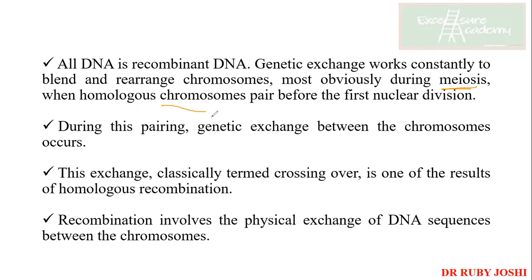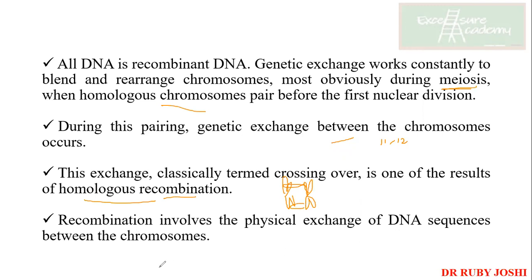So in the case of meiosis, during this period, genetic exchange between the homologous chromosomes occurs. This is how we have studied at our level through class 12 also. And this exchange, which is termed crossing over, is one of the results of homologous recombination. Now why is it homologous? Because they are the homologous chromosomes, and between these homologous chromosomes the recombination is happening. This recombination involves the physical exchange of DNA sequences between the chromosomes.